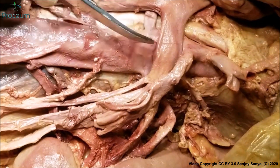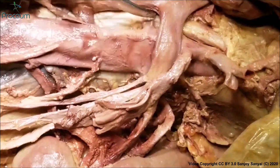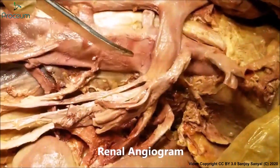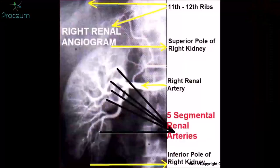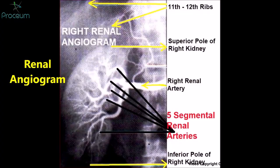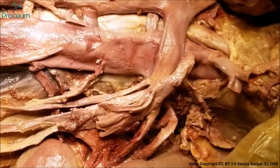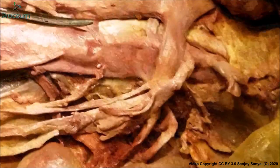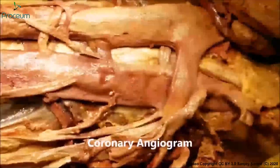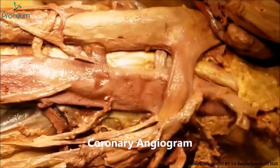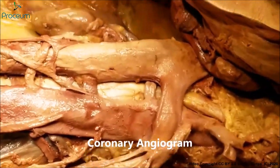We can also cannulate the renal arteries and get the renal angiogram. This is a selective renal artery angiogram to show the segmental renal arteries. And not only that — we can continue the cannulation and perform even coronary angiograms.